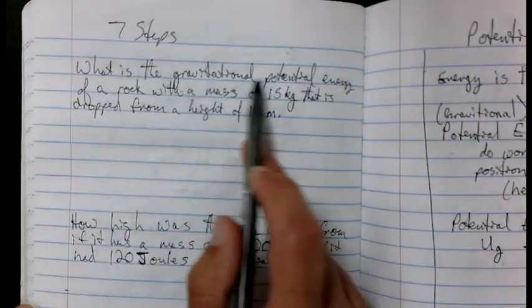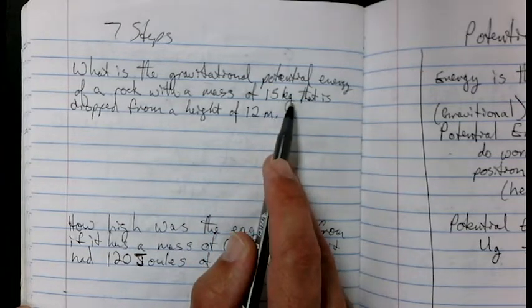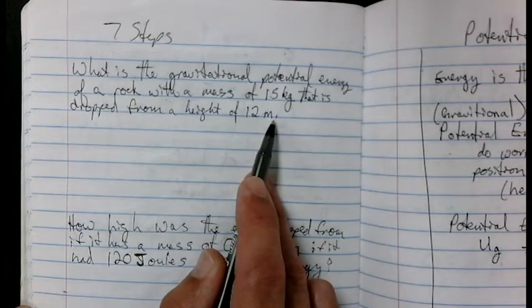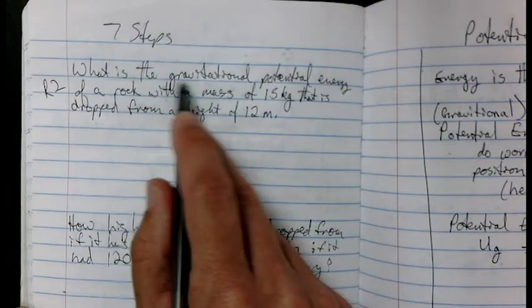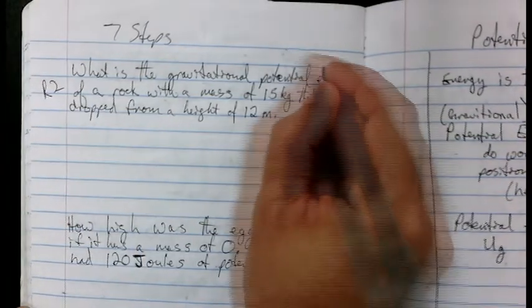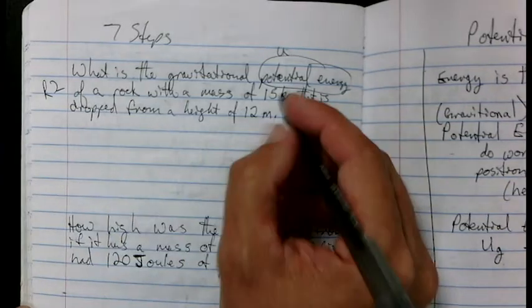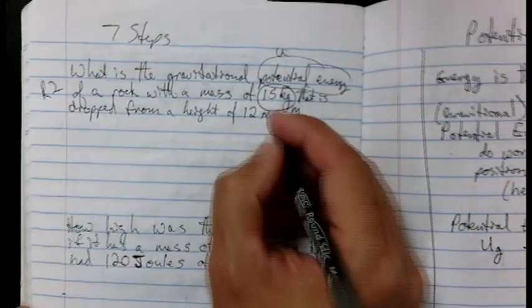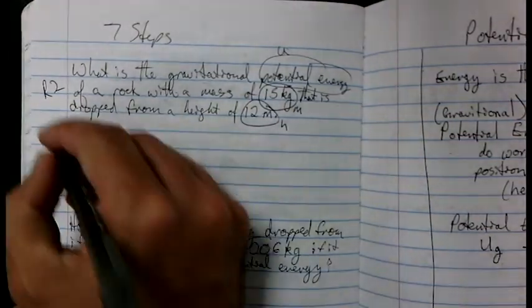What is the gravitational potential energy of a rock with a mass of 15 kilograms that is dropped from a height of 12 meters? I've read it once. Now I'm going to read it again and mark my items. What is the potential energy, which is U, of a rock with a mass of 15 kilograms, that's M, that is dropped from a height of 12 meters? That's a height. So I've circled and labeled. I've read it.